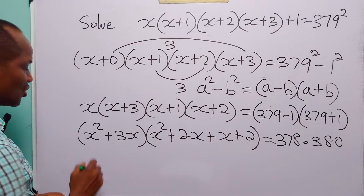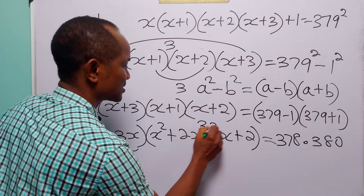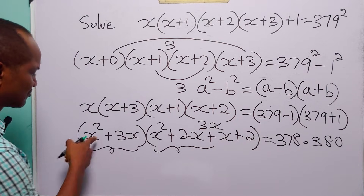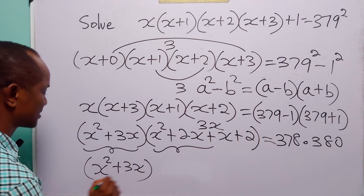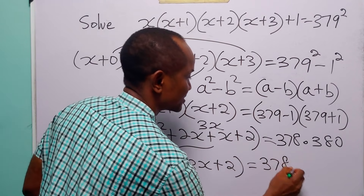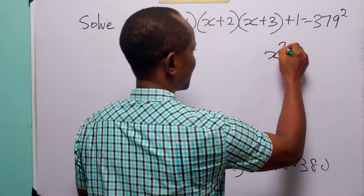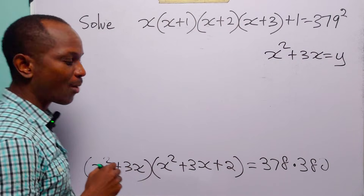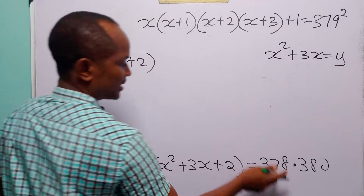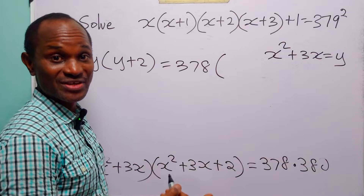Now when you look at these two brackets, you're going to see x squared plus 3x. And you know that 2x plus x is also going to give us 3x. So here you're also going to see x squared plus 3x plus 2. So that means we have (x squared plus 3x) multiplied by (x squared plus 3x plus 2), and this is equal to 378 times 380. To simplify the left-hand side, let x squared plus 3x be equal to y. Then here we have y, and here we have y plus 2.